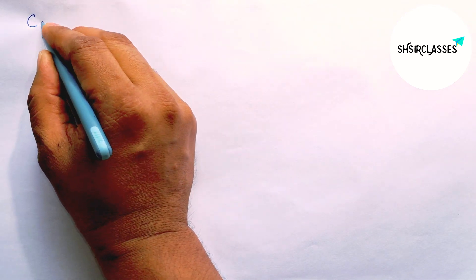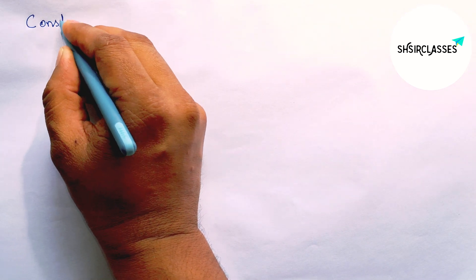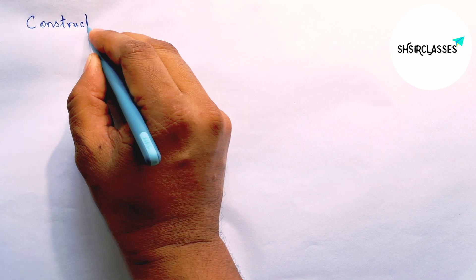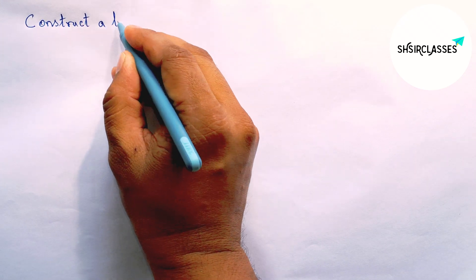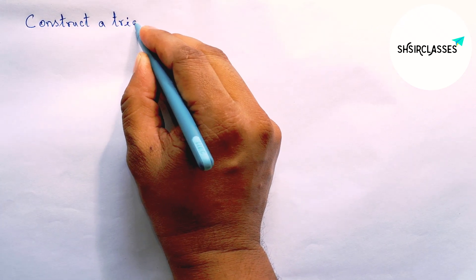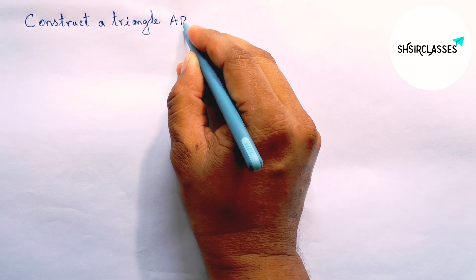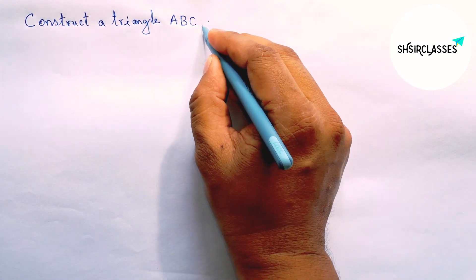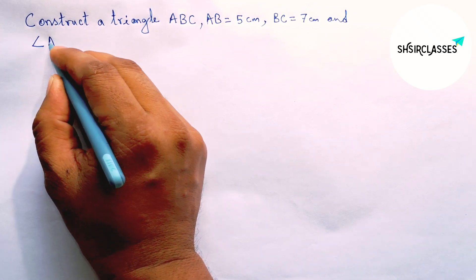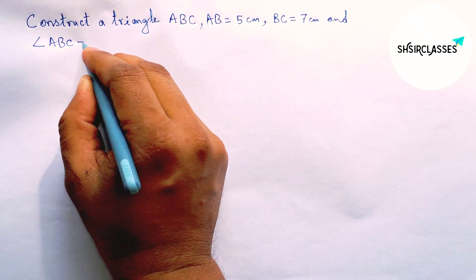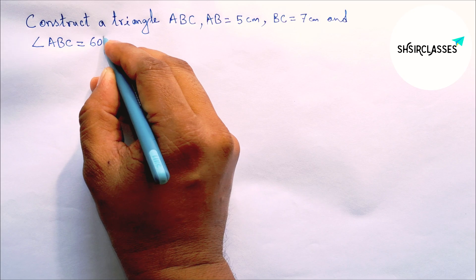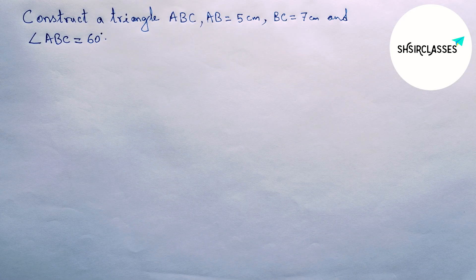Hi everyone, welcome to Shashur Classes. Today in this video, we'll construct a triangle ABC where AB equals 5 centimeters, BC equals 7 centimeters, and angle ABC equals 60 degrees. Let's start the video.